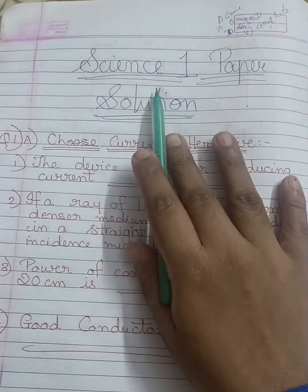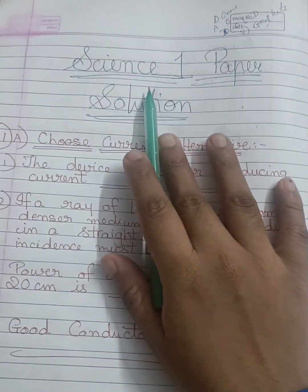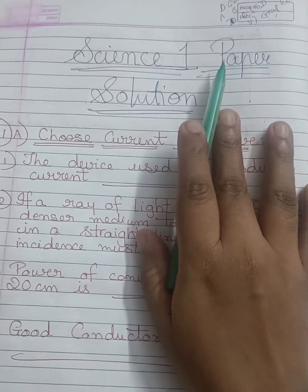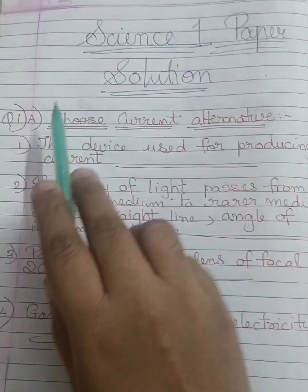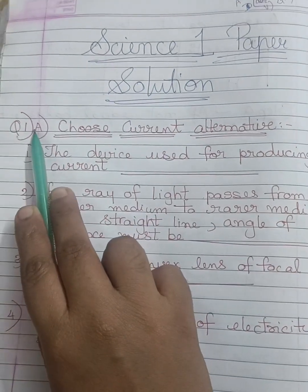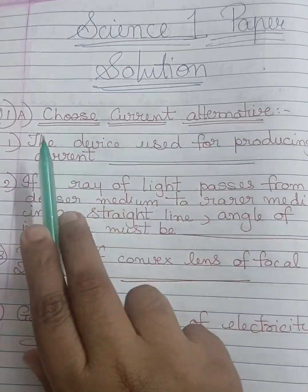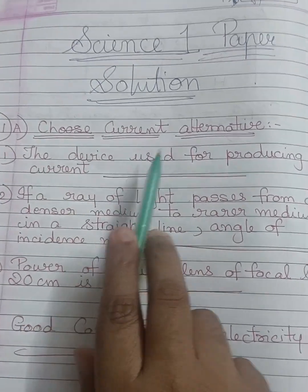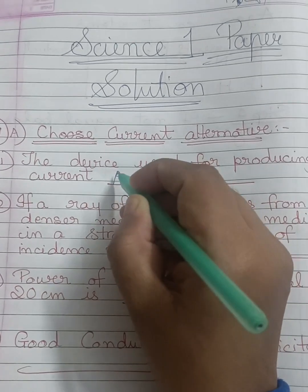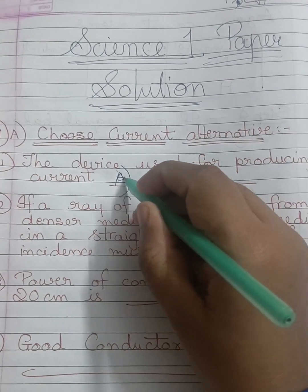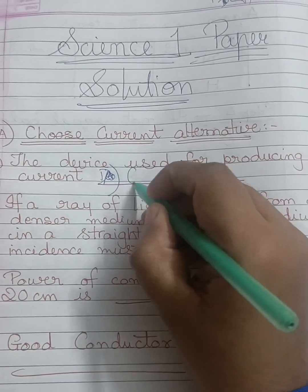Hello everyone, welcome to Students World. Hope your Science 1 paper has gone well. Let's see the Science 1 paper solution. Question number one A, MCQ: choose the correct alternative. The device to produce current — the answer is D, generator.